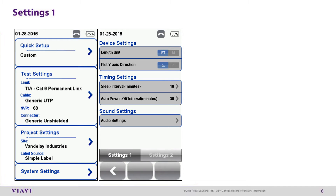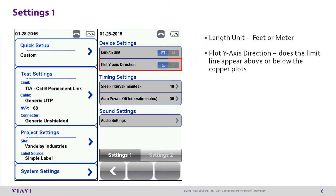Under System Settings 1, the Length Unit option allows you to choose between feet or meters. Plot Y-axis Direction changes the direction in which copper plots will be displayed — either above the X-axis or below the X-axis.